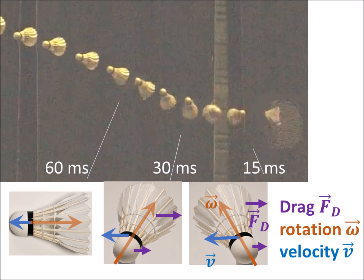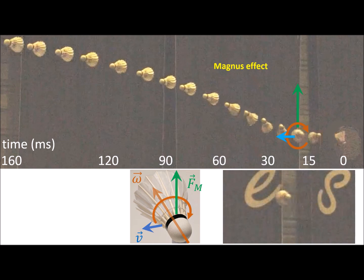30 ms is the time required for the drag force to flip the shuttlecock along its velocity. The shuttlecock experiences Magnus effect when it is perpendicular to its trajectory, and this lasts only 30 ms.